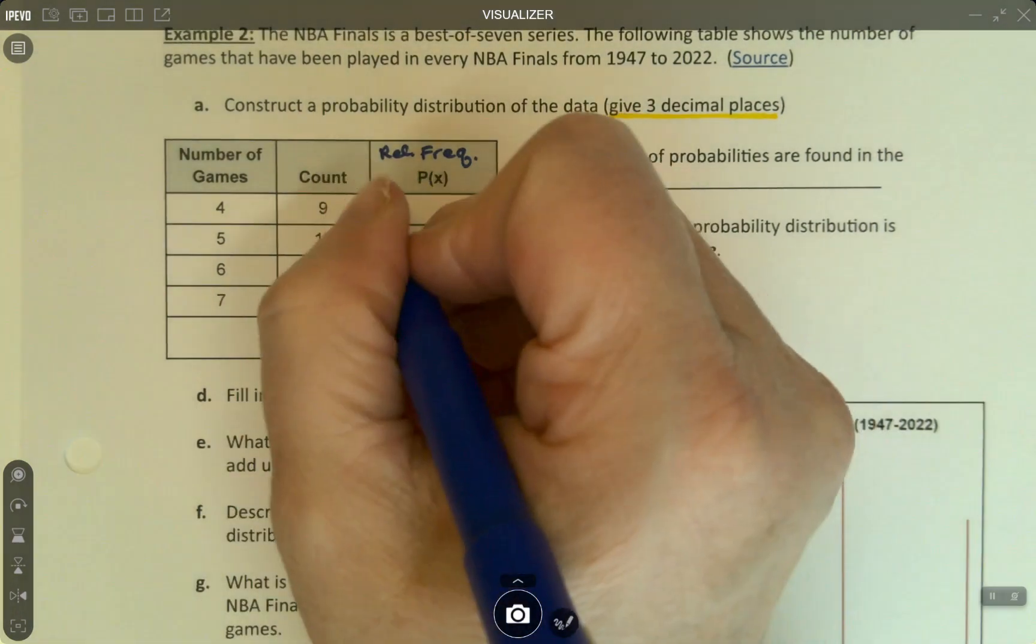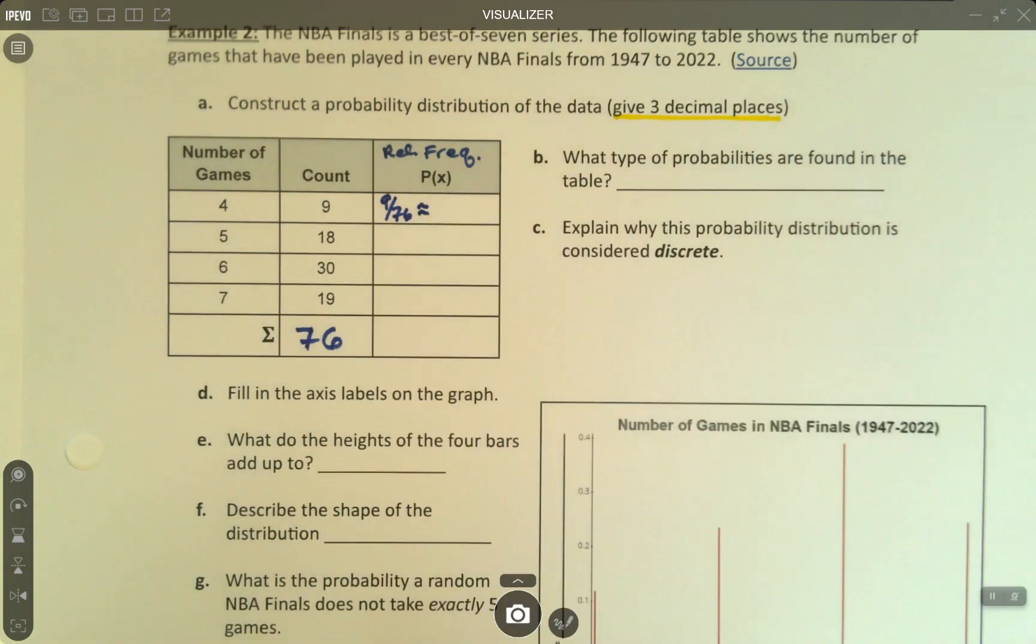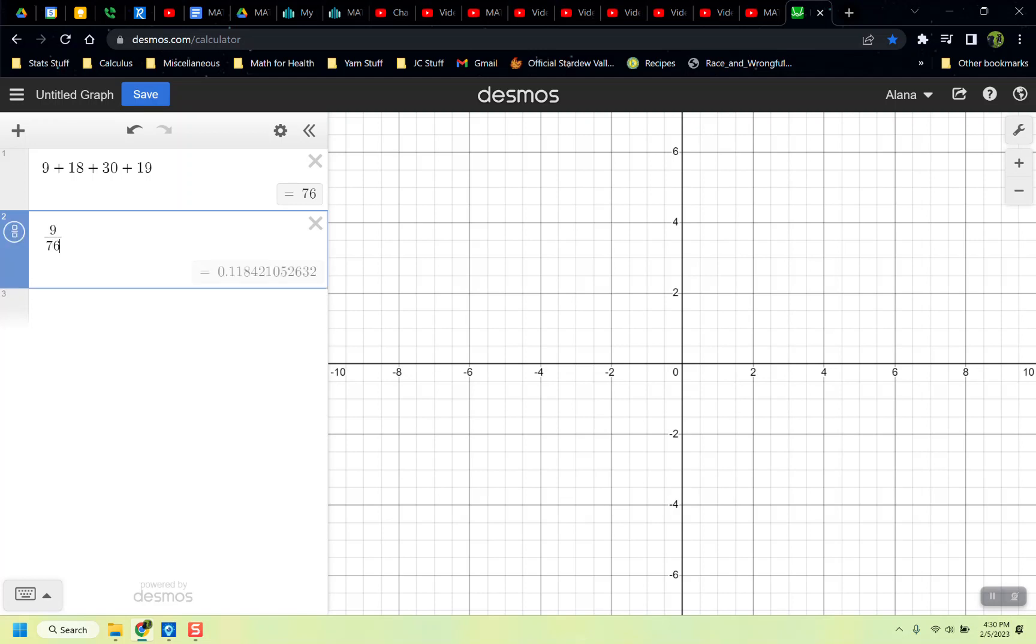Now I want to find those relative frequencies with three decimal places. I'm going to take 9 divided by 76, 18 divided by 76, 30 divided by 76, and 19 divided by 76. There we have the values: 0.118, 0.237, 0.395, and 0.25. The last one isn't even rounded, it just is, and that's fine.